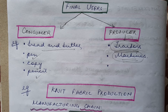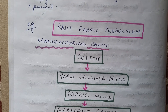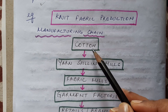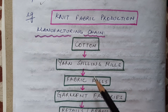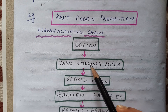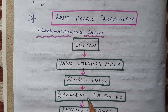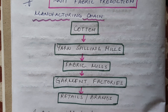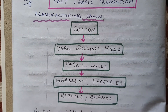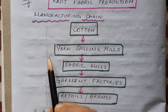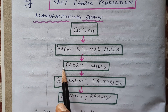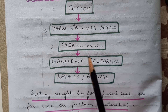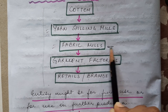Let's revisit the manufacturing chain we discussed earlier. In a cotton factory, first cotton is given to yarn spinning mills; from yarn it goes to fabric mills where threads are converted into fabric; fabrics are turned into garments; and then they are handed over to retail brands for selling. So cotton, yarn, and fabric are all considered intermediate goods in this chain.